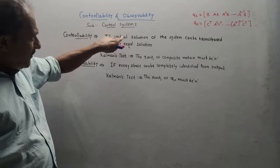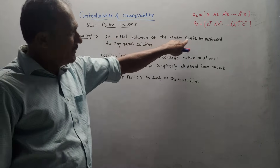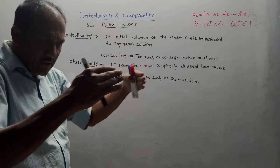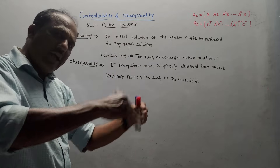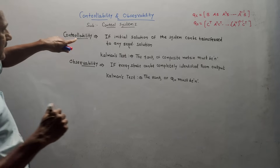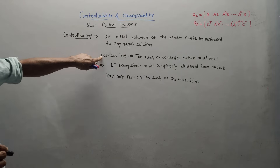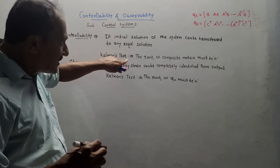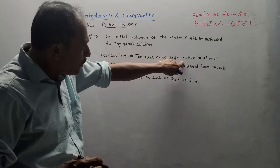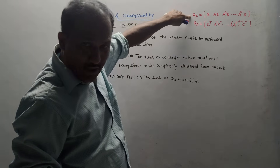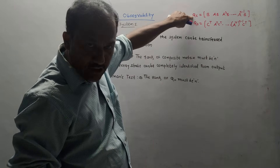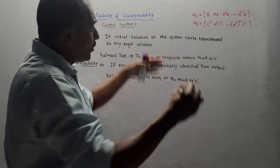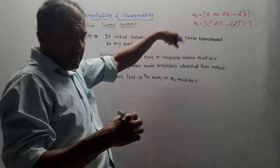Controllability: the definition is if the initial state of a system can be transferred to any required state — that means if you have some initial state and you are in a position to transfer it to any desired or required state — then it is a controllable system. For this test, the rank of the composite matrix QC must be N.